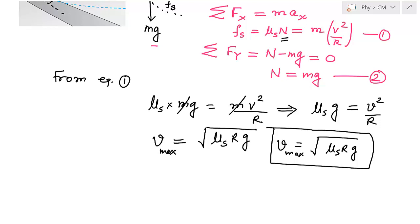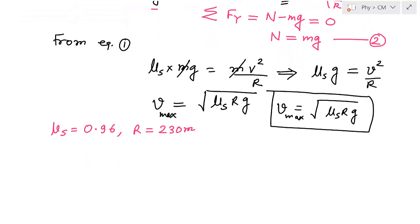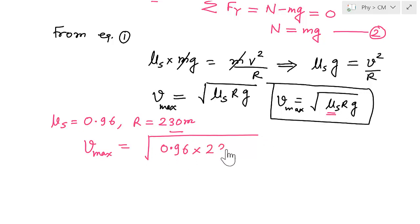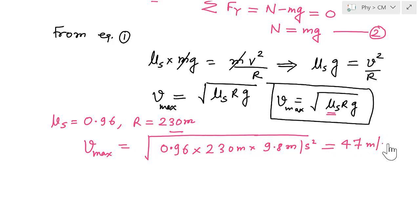Let us take a numerical example. If μs = 0.96 and r = 230 m, then V_max = √(0.96 × 230 × 9.8). Calculating this gives approximately 47 m/s. So for a curve of radius 230 m with μs = 0.96, the maximum safe speed is about 47 m/s — roughly 50 m/s.